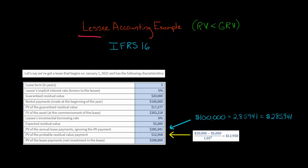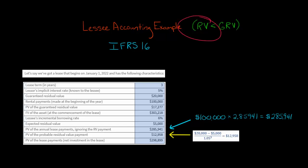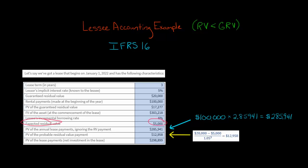Let's do another example of how a lessee would account for a lease under IFRS 16. In this example, we're going to assume that the lessee's expected residual value is lower than the guaranteed residual value. The guaranteed residual value here is $20,000 — the lessee is telling the lessor that at the end of the lease, the asset will be worth at least $20,000. But the lessee expects the residual value will only be worth $5,000, so we have a $15,000 shortfall: $20,000 minus $5,000.